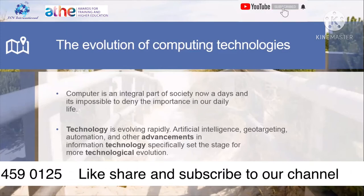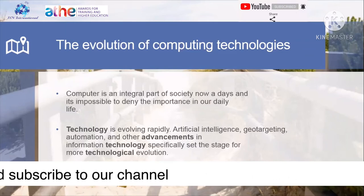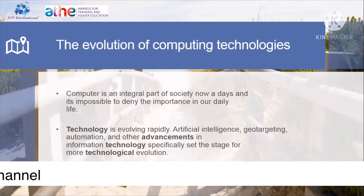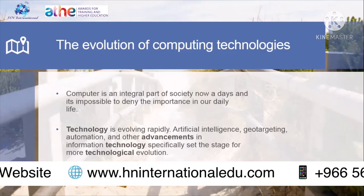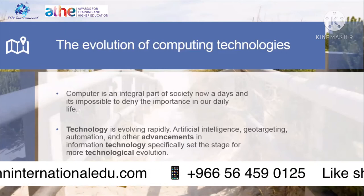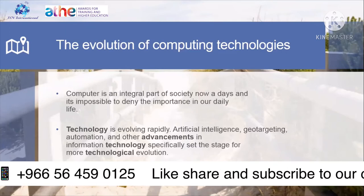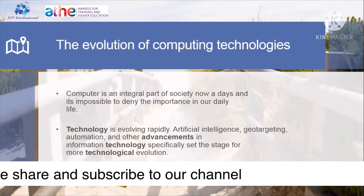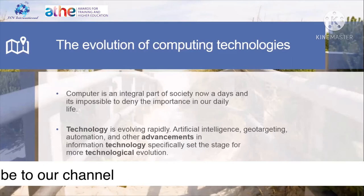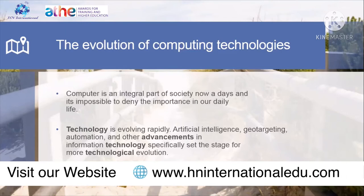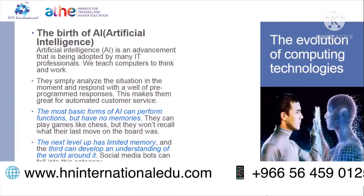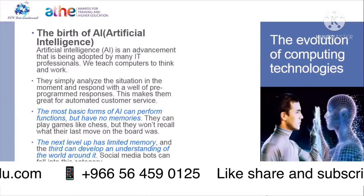Since technology is evolving rapidly, artificial intelligence, geo-targeting, automation, and other advancements in information technology are setting the stage for more technological evolution. Artificial intelligence is a system that thinks like a human being — we give the system the power to think and yield the best possible answer. Geo-targeting relates to geography: Google Maps and similar apps detect things like oil under the earth. We will now learn about the birth of AI.